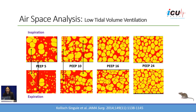A very informative study by Dr. Colish-Singul, published in JAMA Surgery 2014, was done in rats with ARDS. They looked at the airspace between expiration and inspiration with increasing PEEP levels during low tidal volume ventilation. At a PEEP of 5, you can see a cluster of alveoli that are partially opened and others that are almost collapsed. During inspiration, air is preferentially distributed to the healthier alveoli, which open much larger.